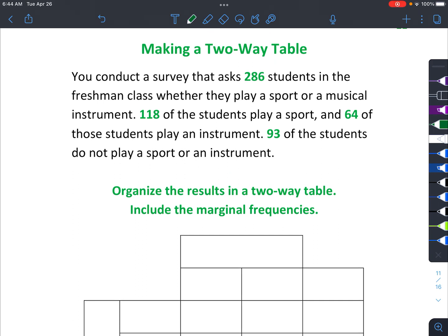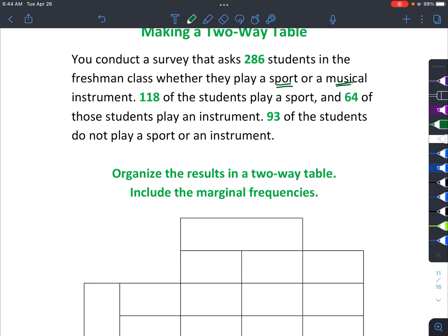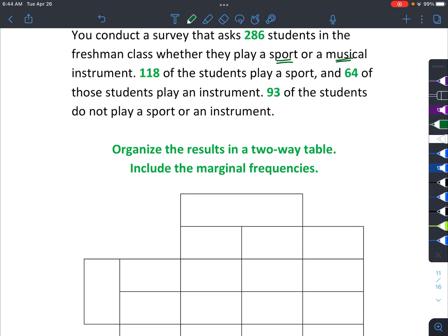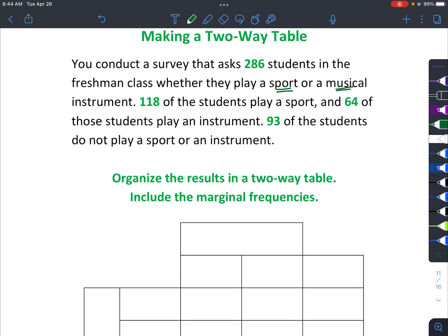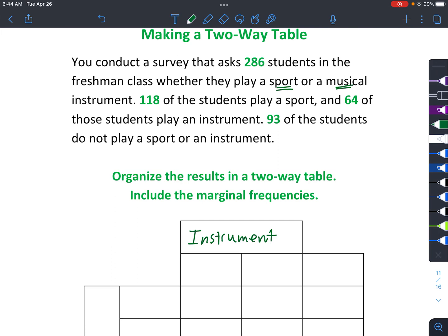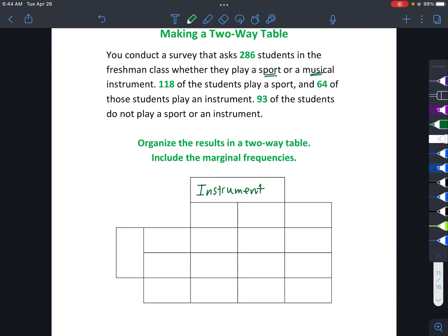Okay. So now we're going to talk about how to actually make this. So let's say you conduct a survey that asks 286 students in a freshman class whether they play a sport or a musical instrument. And we've got some other numbers here. Let's just go ahead and start setting up the table. Because you want to start with the two categories. And so the things that we're finding out is whether they play an instrument.